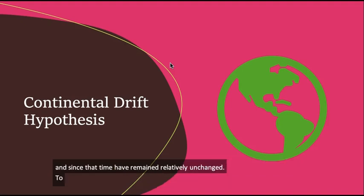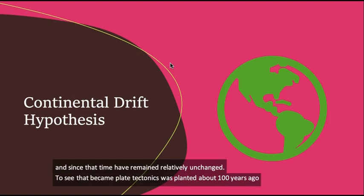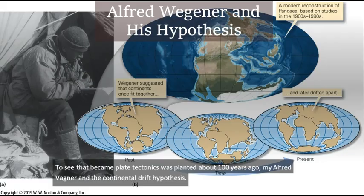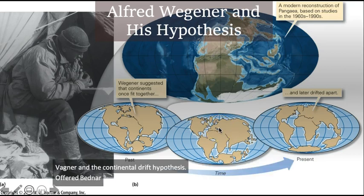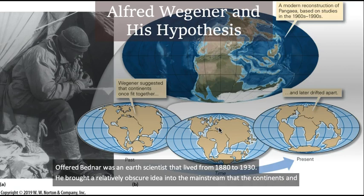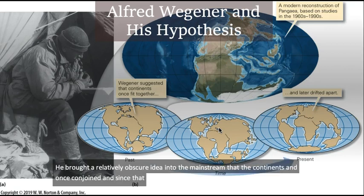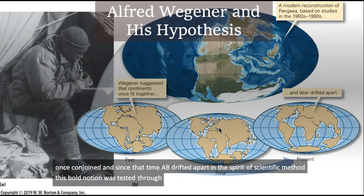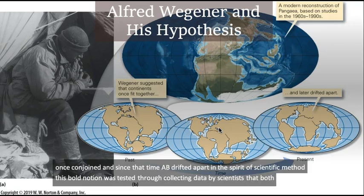The seed that became plate tectonics was planted about 100 years ago by Alfred Wegener and the Continental Drift Hypothesis. Alfred Wegener was an Earth scientist that lived from 1880 to 1930. He brought a relatively obscure idea into the mainstream, that the continents had once been joined and since that time have drifted apart.